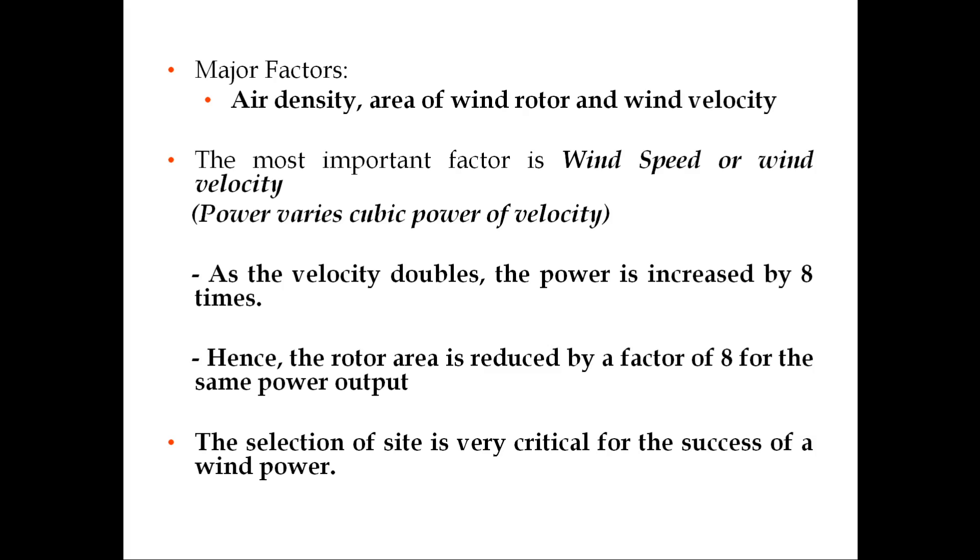These are the major factors. As you have seen in the previous slides to summarize, as the velocity doubles, power is increased by 8 times. For the same power output, the rotor area could be reduced at a location where the high wind velocity is there. You can considerably reduce the size of the wind turbine for getting similar power output in an area where wind velocity is very less. So the selection of site is very critical for the success of a wind power farm.